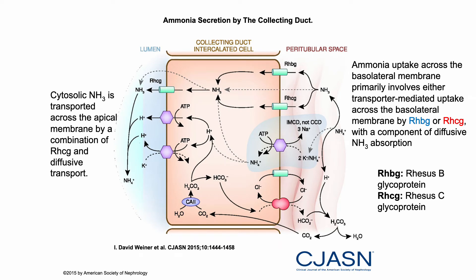Step three: ammonia moves from the peritubular space into the intercalated cell of the collecting duct via two receptors — rhesus B glycoprotein (RHBG) and rhesus C glycoprotein (RHCG) — with some directly diffusing in. The final step is for this ammonia to exit back into the lumen and bind with hydrogen to form ammonium, partly by direct diffusion and partly through the apical membrane via RHCG.